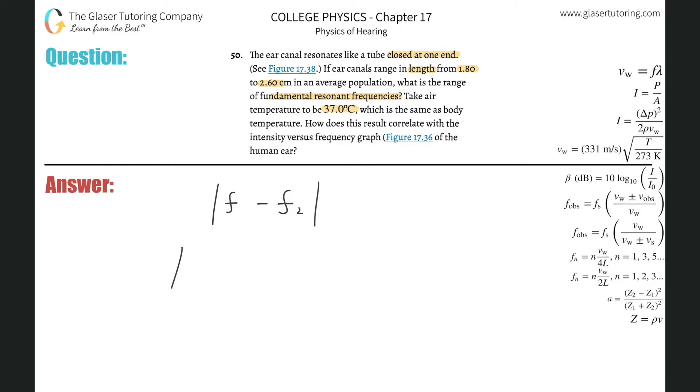Instead of one and two, let me do the frequency of the shorter length, so I'll put f sub s minus the frequency of the longer length.